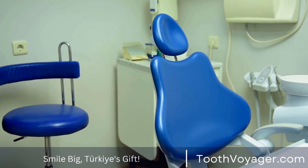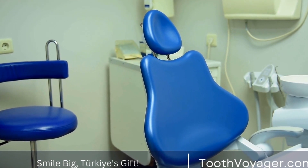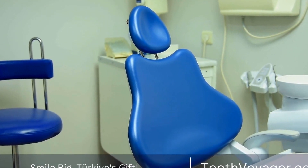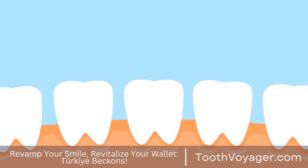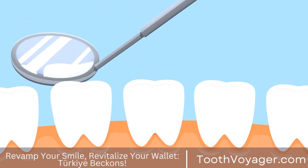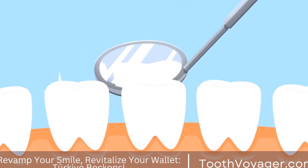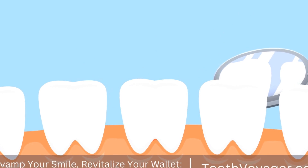Bridges are used to replace one or more missing teeth by attaching artificial teeth to the adjacent natural teeth. They help restore the appearance and function of the teeth and prevent the surrounding teeth from shifting.